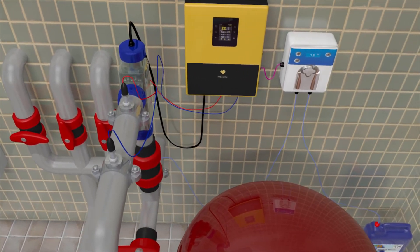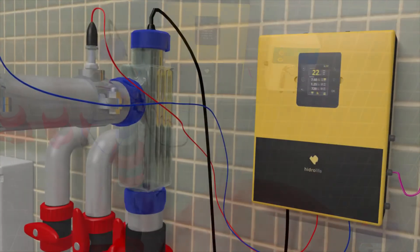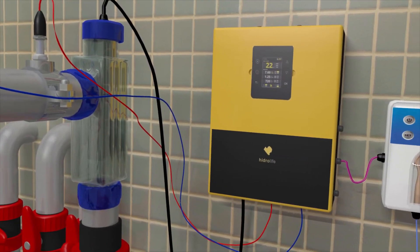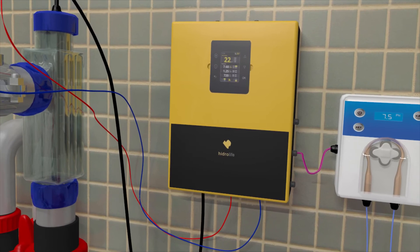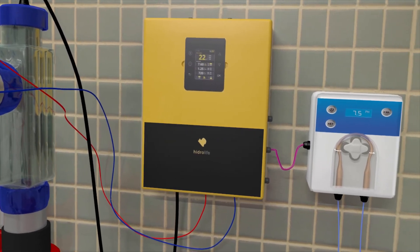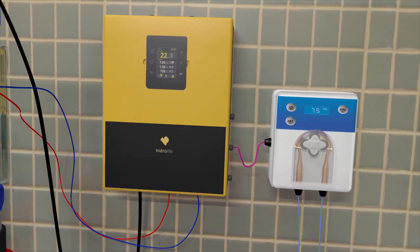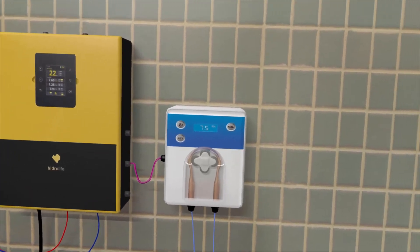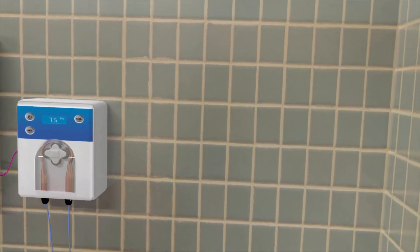Certain chlorine generators have a built-in automatic pH regulator system, which is one of the most important parameters to keep our swimming pool's water perfectly balanced. But we will leave this for another video.